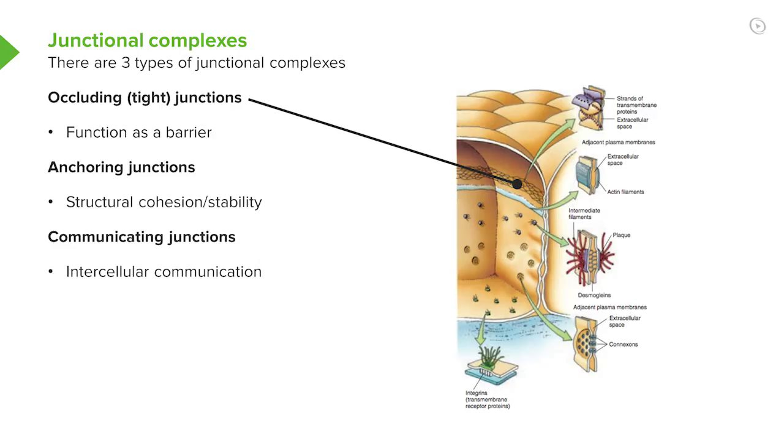Lower down in the diagram, you can see anchoring junctions. And there are two types of anchoring junctions. Some are called the zonular adherents, meaning they form a belt-like structure around the cell. The occluding junctions do the same.